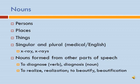To quickly review: our nouns are person, place, or thing. We have singular nouns or plural nouns, such as x-ray is singular, x-rays is plural. We also have nouns formed from other parts of speech. To diagnose is a verb, but diagnosis is a noun. To realize is a verb; realization is a noun. To beautify is a verb; beautification is a noun. Our nouns are formed from other parts of speech, and depending on what part of speech we're talking about, it may affect how our words are spelled.